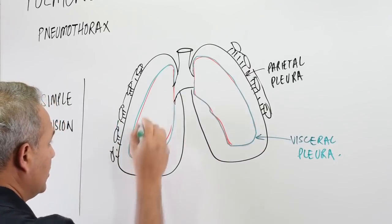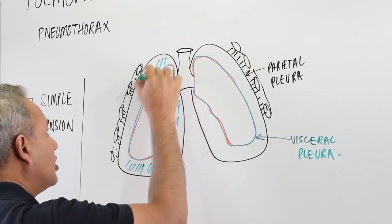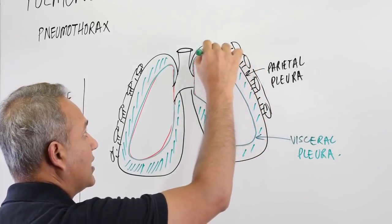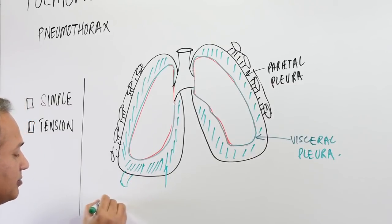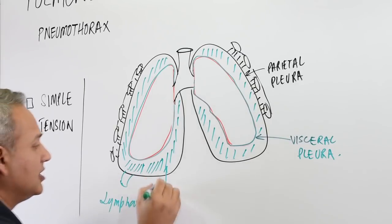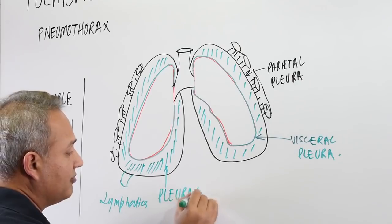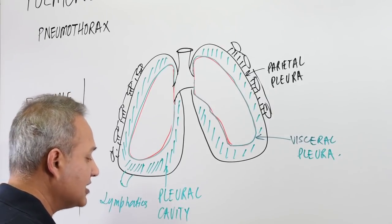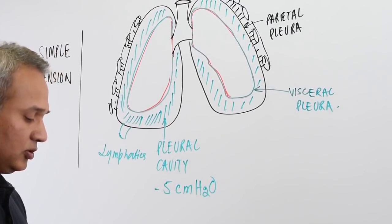The chest wall keeps the parietal pleura pulled outwards. The cavity between the visceral and parietal pleura is the pleural cavity — that is today's topic. Normally, the pleural cavity has a small suction effect because of the lymphatics, represented as a small faucet-like structure.